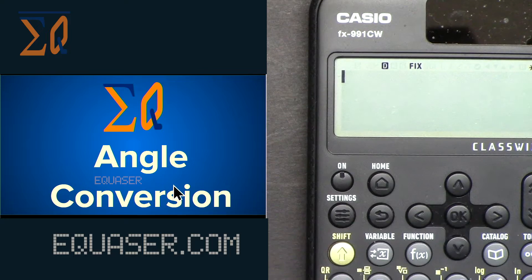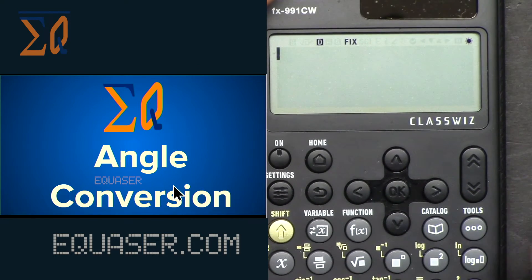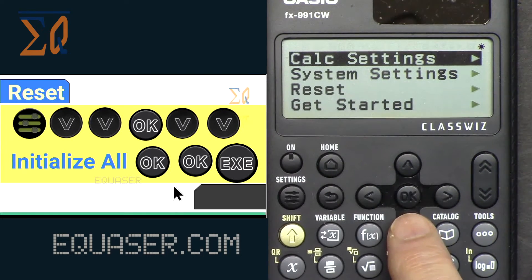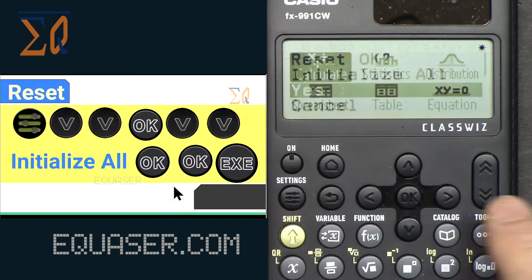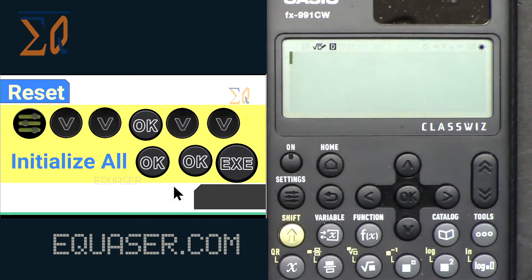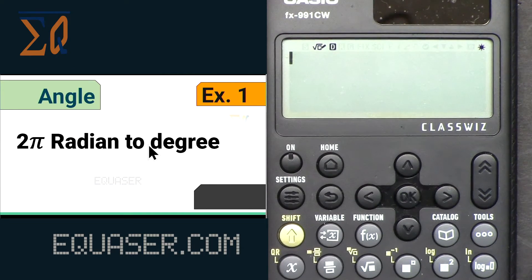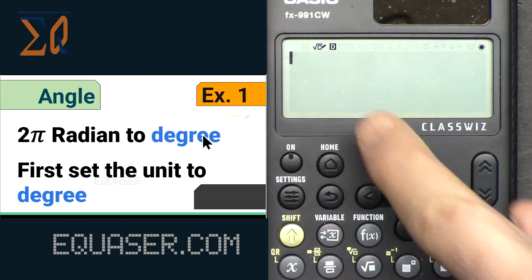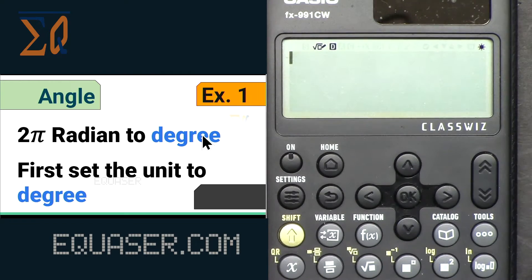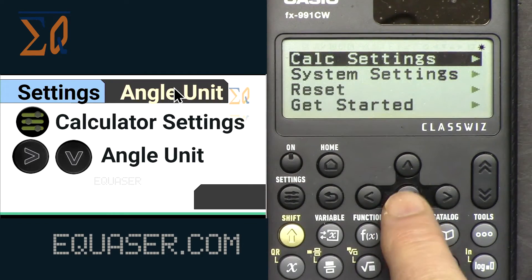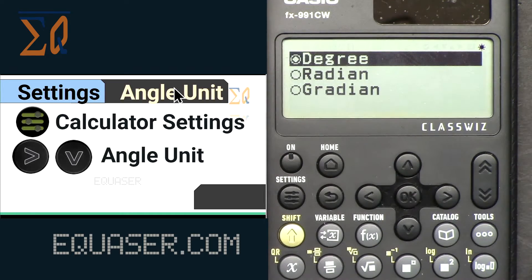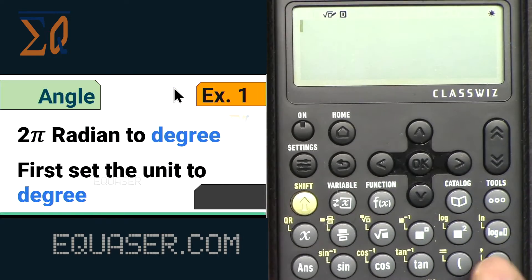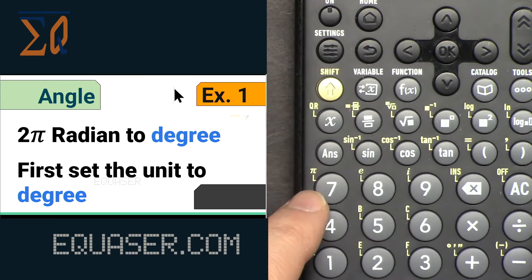To do angle conversion with this calculator, first let's reset our calculator so we're in the same setting. Press Settings, Reset, Initialize All, Yes, and then EXE or All Clear. Let's say you want to convert 2π radians to degrees. First we have to be in the unit of conversion because we want the degree, it must be in degree.